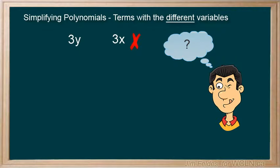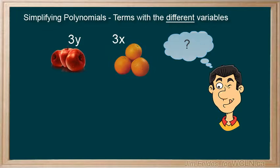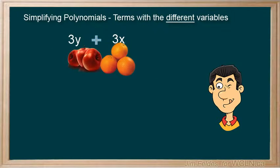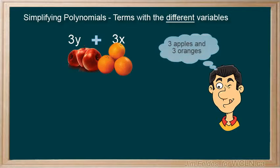We don't know what the values for the y or the x are. All we know is that we have 3 of each of them. They could be 3 apples and 3 oranges for all we know. And when we try to put them together, we still have 3 apples and 3 oranges.